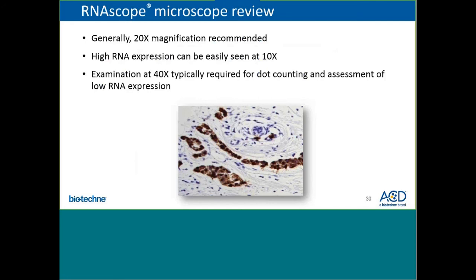For more detailed analyses of expression that include potentially dot counting as well as assessment of low RNA expression, examination at a higher magnification using a 40x objective, or 400 times magnification, is typically necessary. These contexts where higher magnification is required are typically determined by the individual researcher or pathologist depending on the desired type of data analysis being performed.